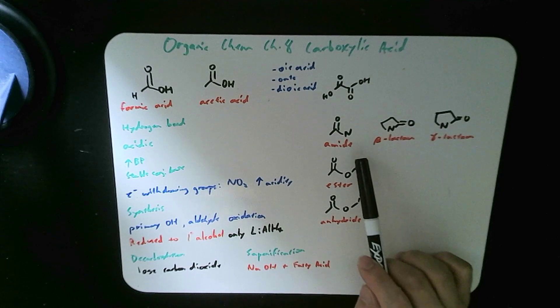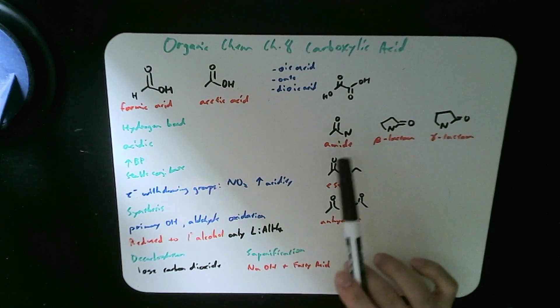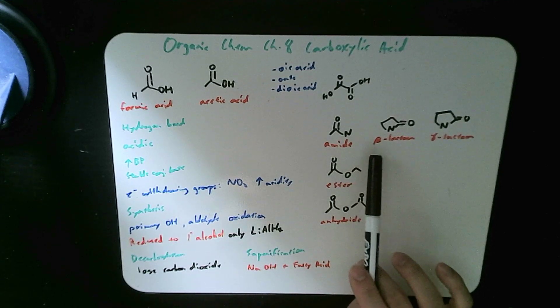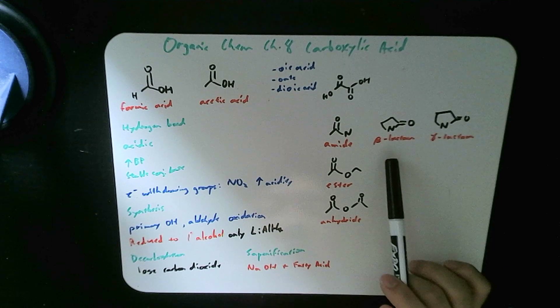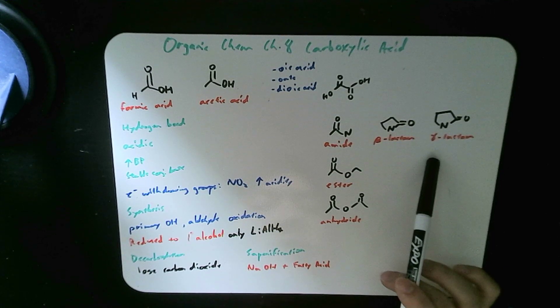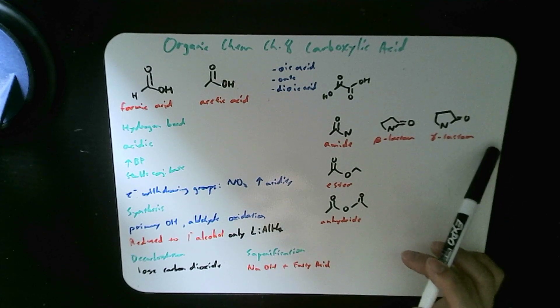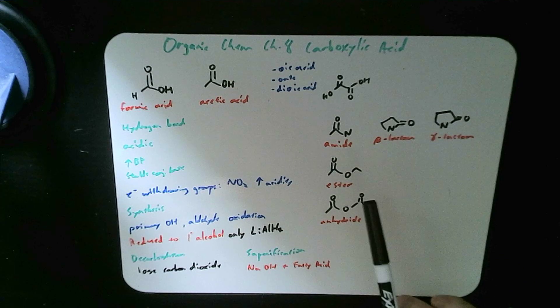We also have amide derivative, which has N instead of OH to it. And for amide, if it is in a cyclic structure, we have the beta-lactam, the simplest. And then we have gamma, and then delta, and then epsilon, and so forth, with more and more member rings.